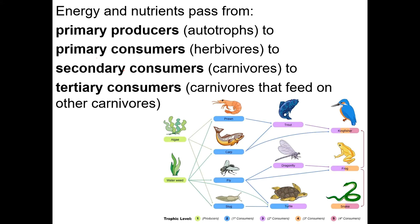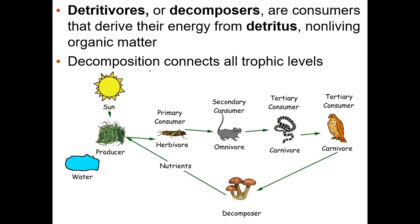In a food web, producers have no arrows coming into them — algae and water weeds with only outgoing arrows are producers. Primary consumers eat producers, secondary consumers eat primary consumers. In a food web a frog that eats a fly that ate water weed is a secondary consumer. Trophic levels are slightly different: producers are the first trophic level, primary consumers the second, secondary consumers the third — so a trout that's a secondary consumer is at the third trophic level because we include producers in the count.